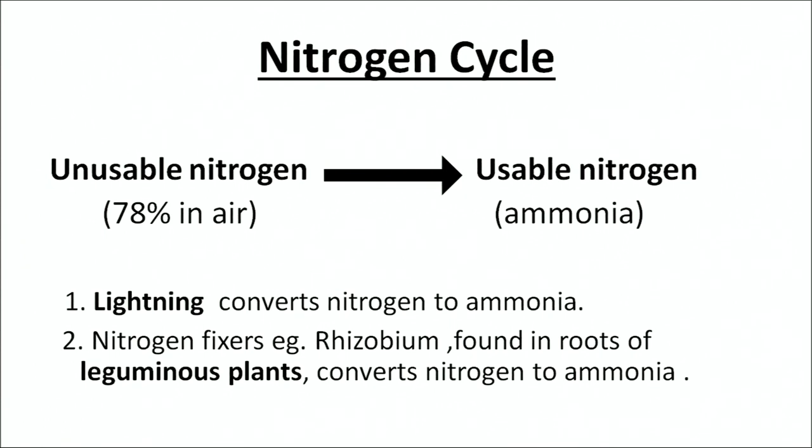Let's come to the nitrogen cycle. The nitrogen in the air, which is 78%, is unusable. To make it usable, it has to be converted from an unusable form to a usable form — this is the role of the nitrogen cycle. This conversion mainly happens in two ways: lightning converts nitrogen to ammonia, and the other mode involves nitrogen fixers, namely microbes such as Rhizobium found in the roots of leguminous plants, which convert nitrogen to ammonia.